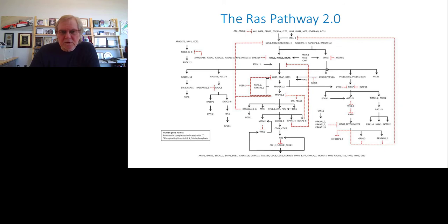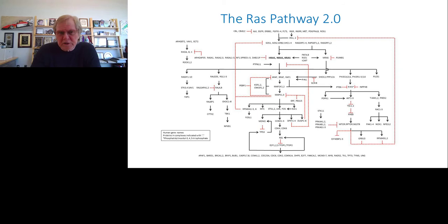RAS proteins are right in the middle of a very complicated signaling transduction network. Attempts to block this network by finding small molecules that bind to targets downstream of RAS — such as MEK, ERK, or PI3 kinase — have not been successful, mostly because of the complexity of the network. When you block individual proteins, the whole network readjusts and cells can continue to proliferate. It's a dynamic, flexible network that's very difficult to shut down.